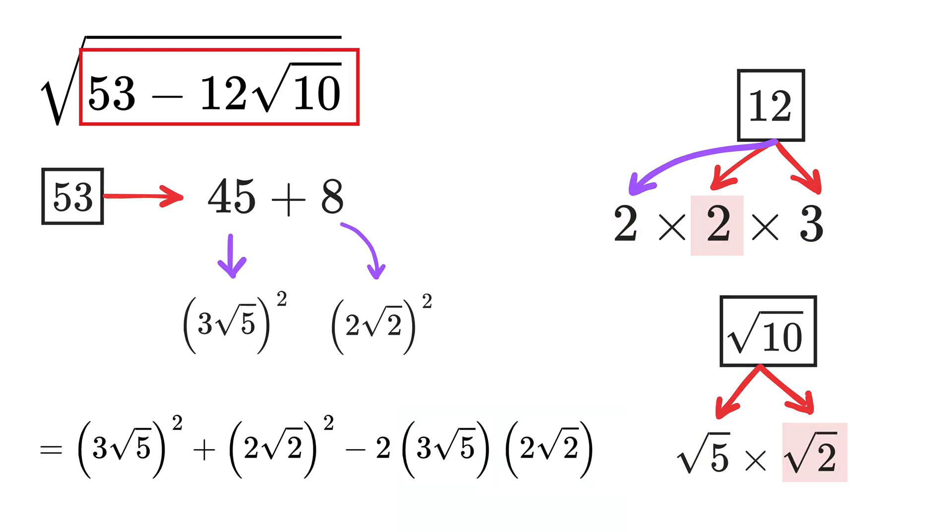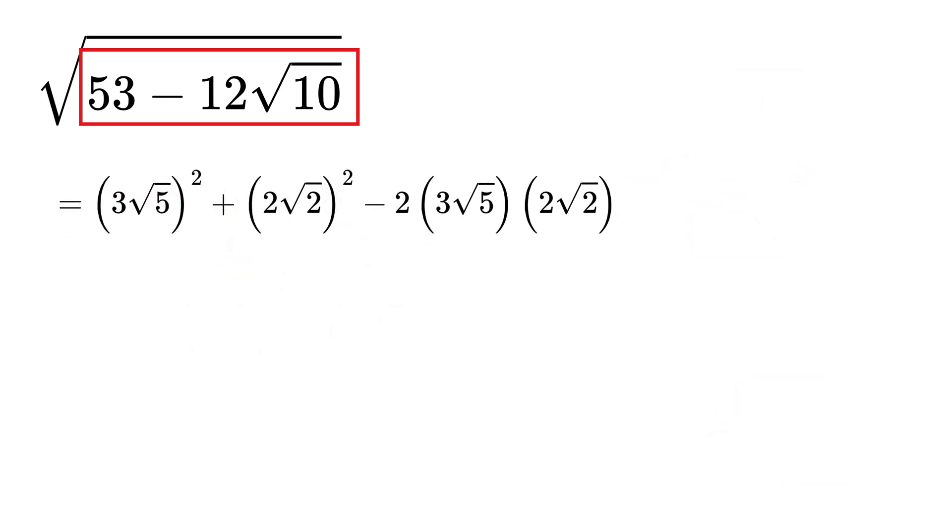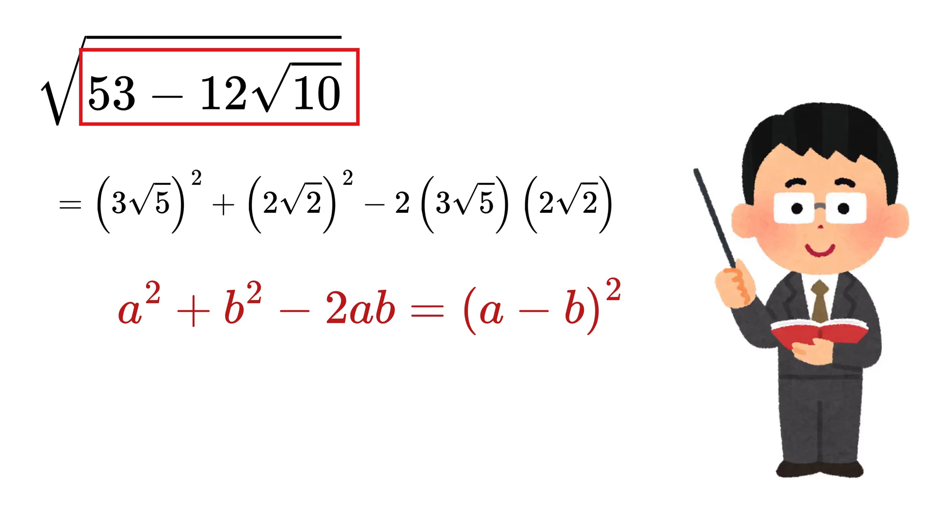This is exactly the structure we need. This is because this entire expression has the form a squared plus b squared minus 2 times a times b. Wow! Now, from algebra, we know that this pattern is equal to a minus b whole squared, right? I was talking about this mathematical identity the whole time.